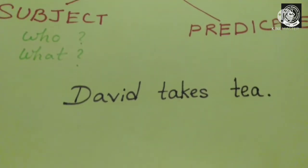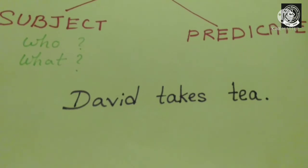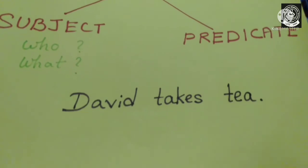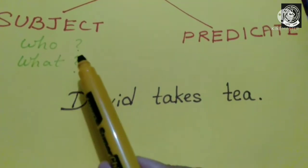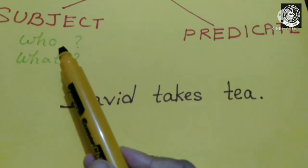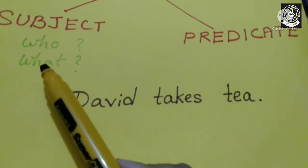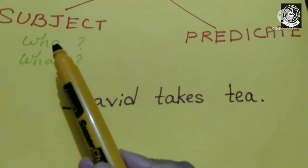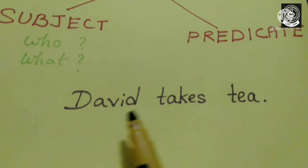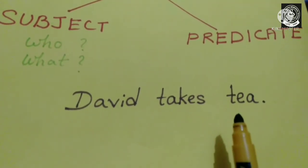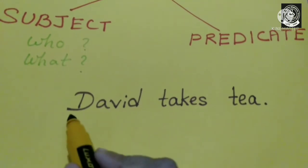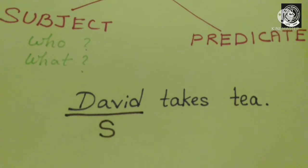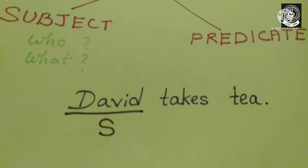Now in this sentence, which part of it is the subject and which part is the predicate? So the easiest way is, as I said earlier, you have to ask question with who or what. So if you ask question with who, your question will be who takes tea. The answer is David. Therefore, David is your subject.